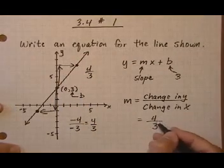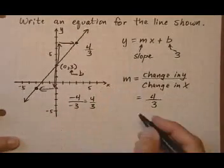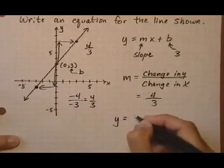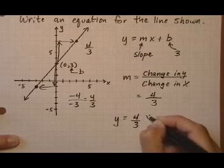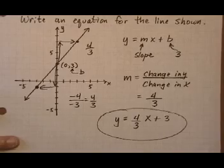Same thing. There's our slope. Now we know our slope and we know our b, so we plug them right into our equation: y = m, slope four thirds, times x plus b, three. And there's our equation.